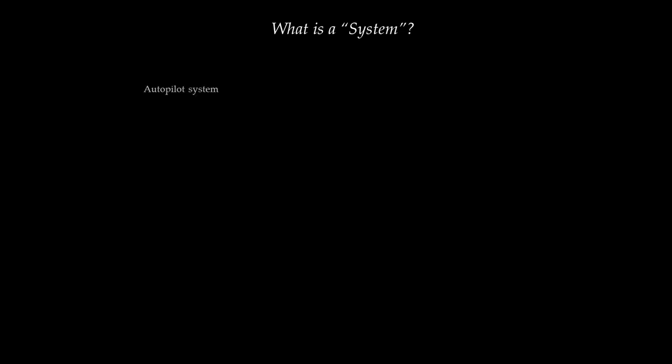With that in mind, let's go to the first question: what is a system? This question is very difficult to answer because the word 'system' is ubiquitous in the English language. There are many examples of its use in everyday discussions as well as engineering discussions — cruise control systems, autopilot systems, taxation systems, cardiopulmonary systems, economic systems, communication systems, systems of governance, healthcare systems, and even complex systems.